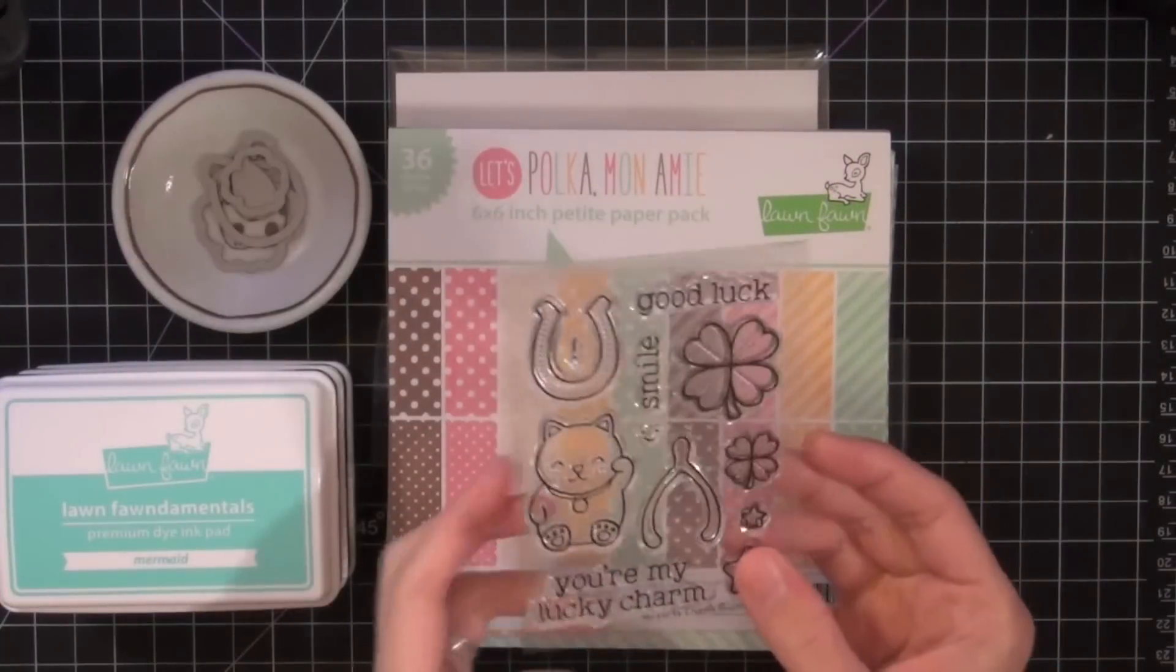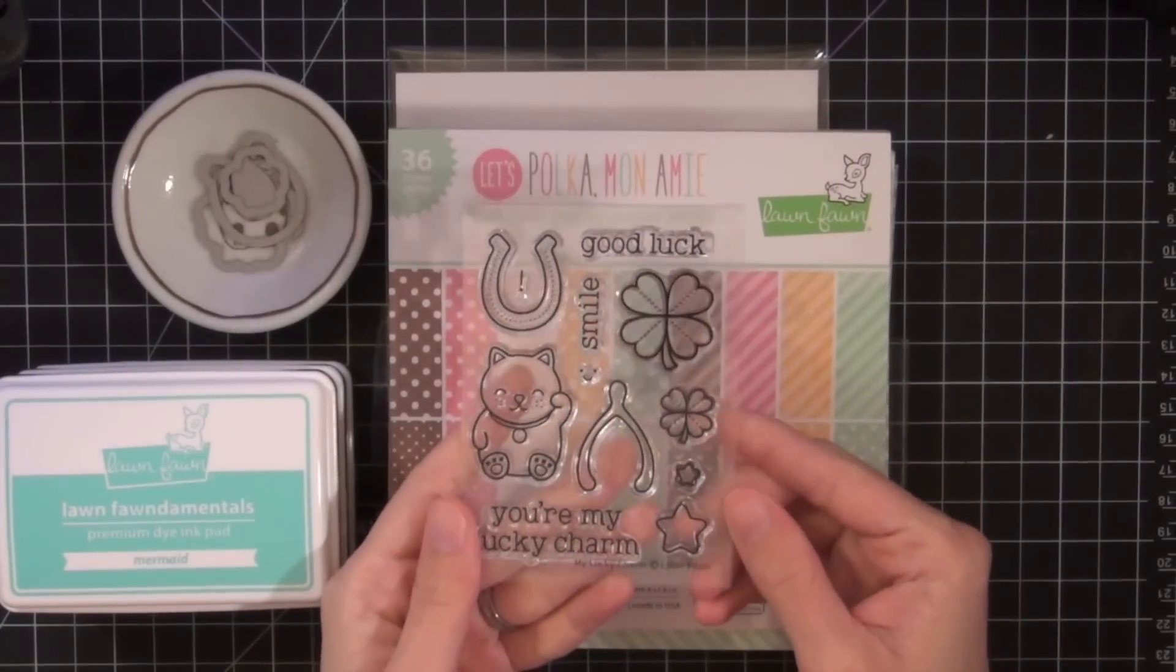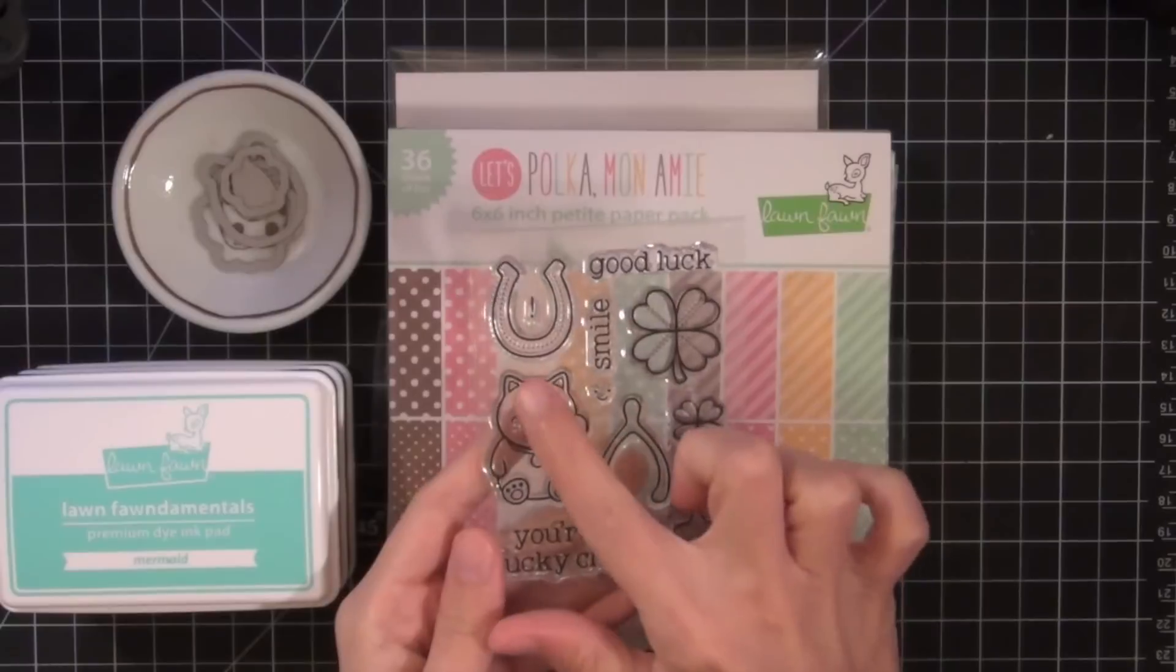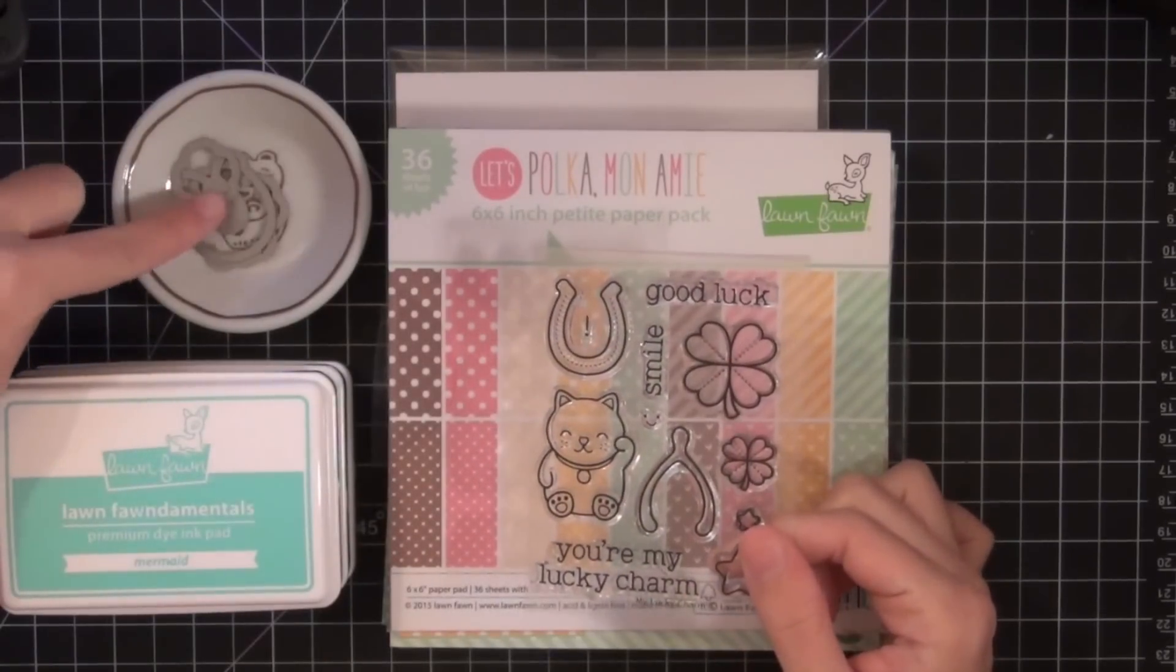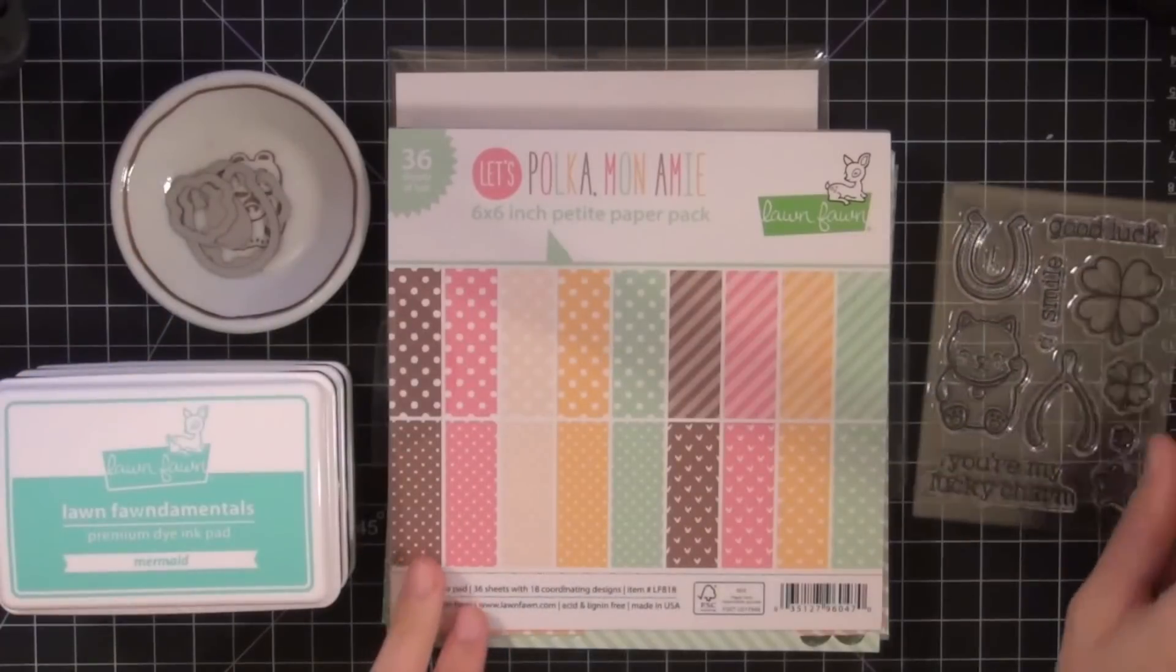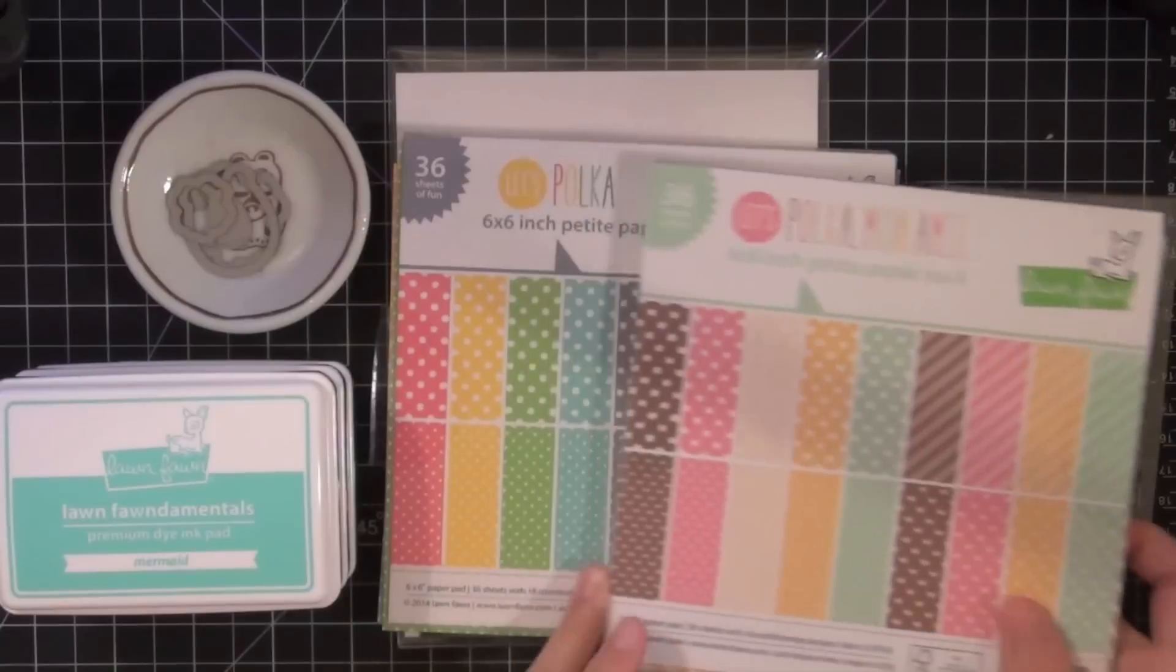So the main supplies I'll be using for this card are of course the My Lucky Charm stamp set. This set has a lot of really adorable images. I especially love the kitty cat but I'll be using the clover images as well as one of the sentiments for this card.